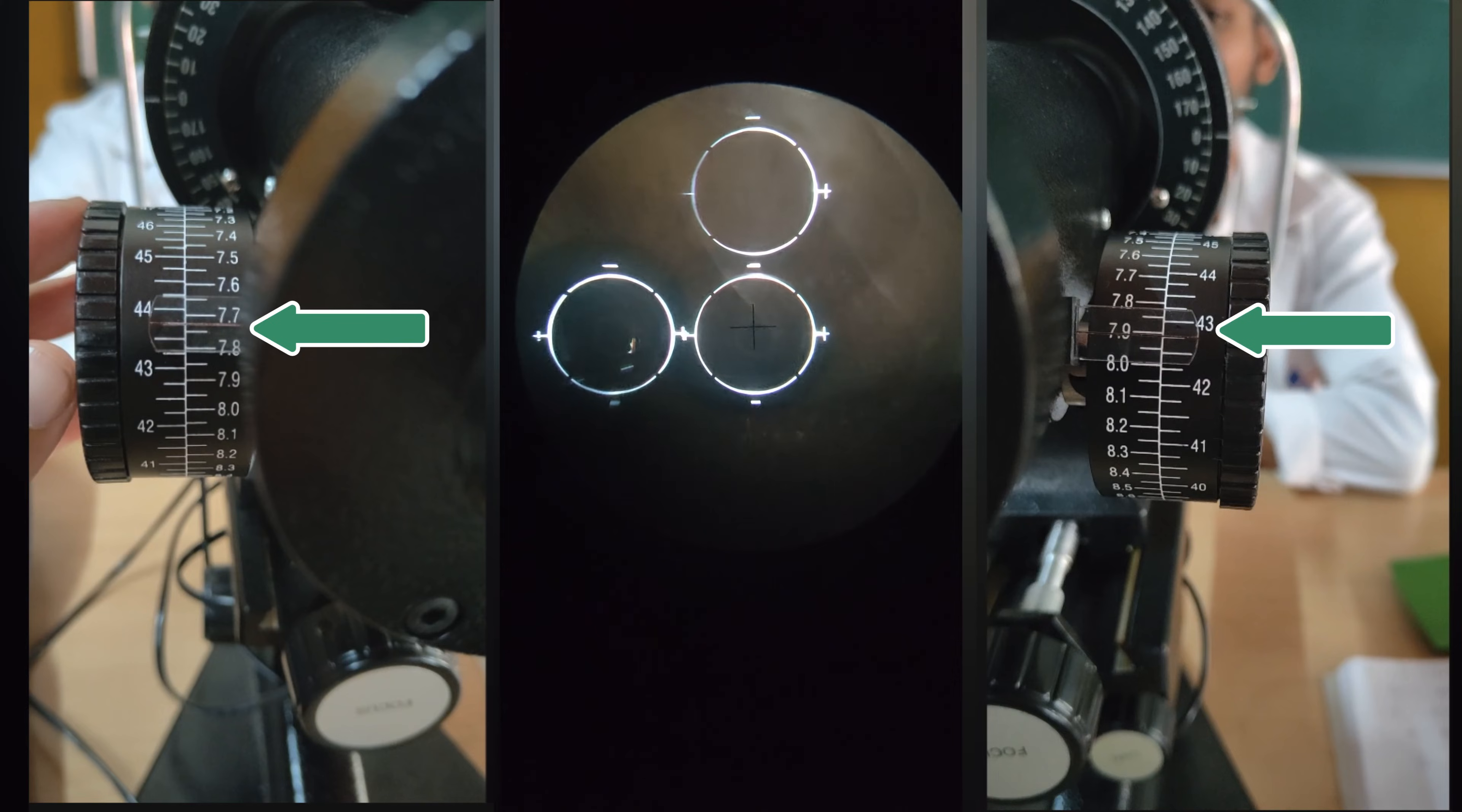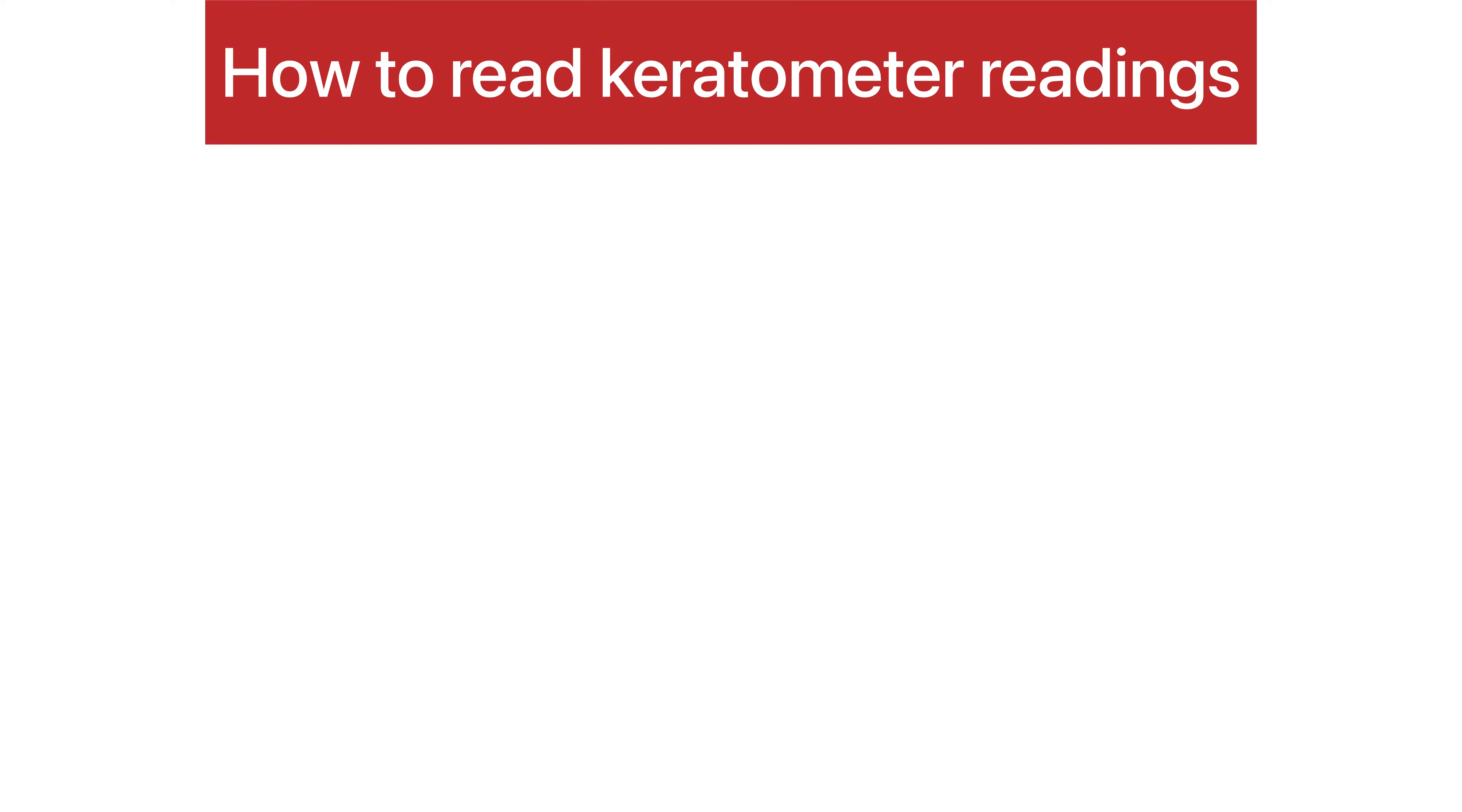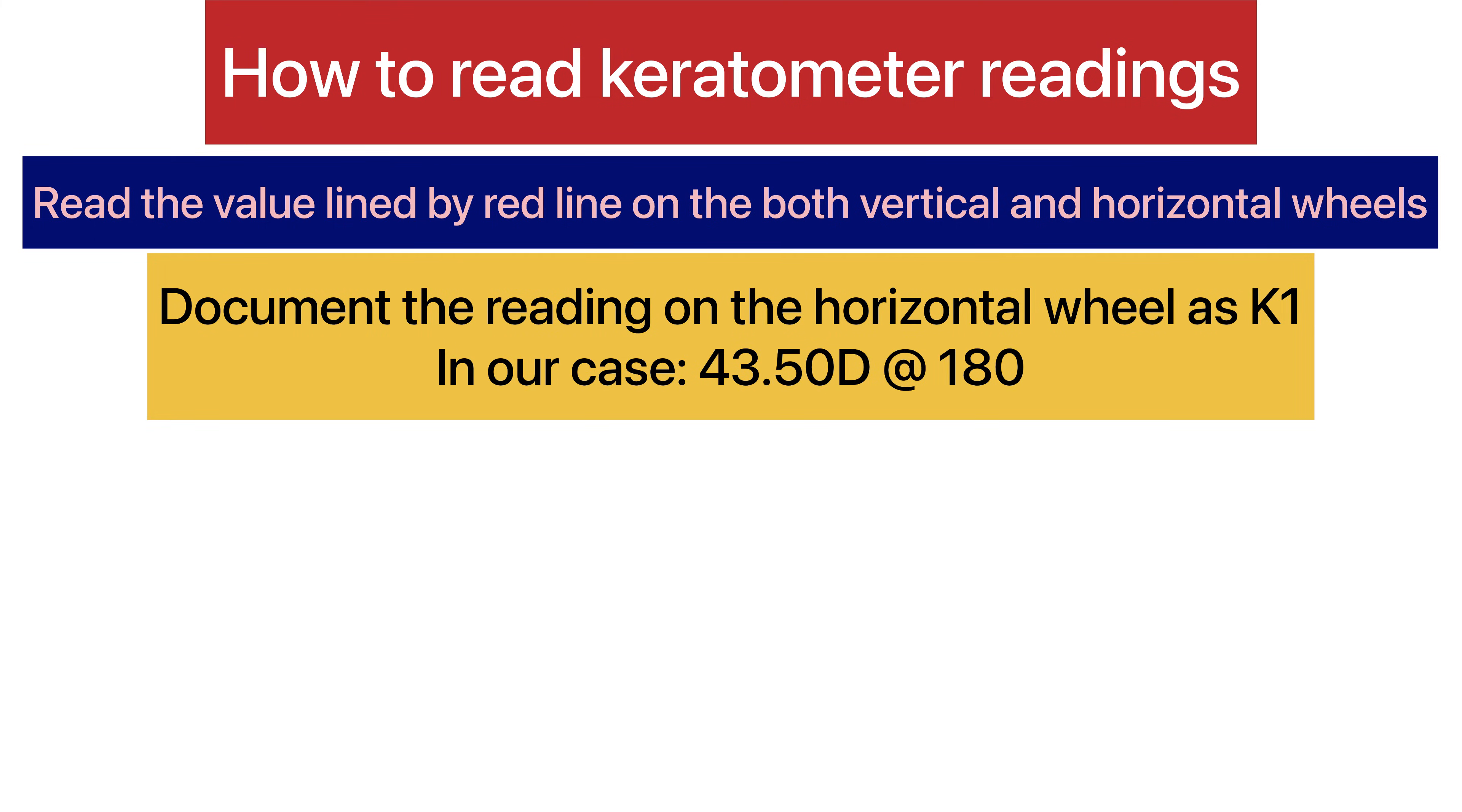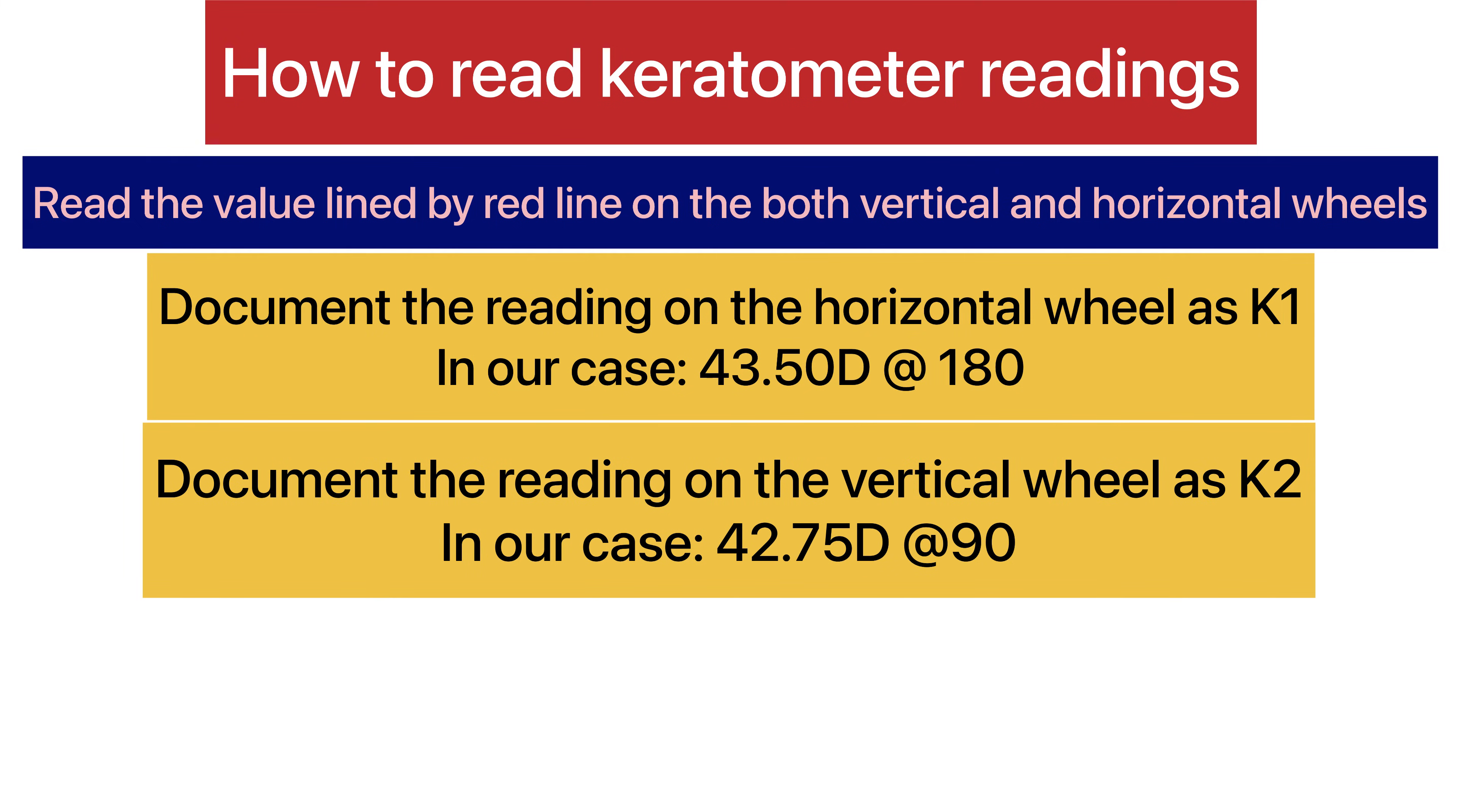Now record the readings. How to record keratometry readings? Read the value lined by red line on both vertical and horizontal wheels. Document the reading on the horizontal wheel as K1. In our case, it is 42.75 diopters toward 90 degrees.